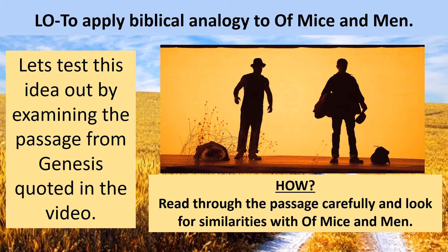We're going to test this idea that the Thug Notes guy proposed by looking at a passage from Genesis — the very first part of the Old Testament. It's printed in your home learning booklet, but I'm also going to read it with you. When we read through it, I'd like you to think about where there might be some similarities with parts of the story or the context of Of Mice and Men. Personally, I am not religious, but that doesn't mean I don't appreciate how beautifully written parts of the Bible are. You will also notice there are some little numbers all the way through — those are the different verses within the chapter, because the Bible is essentially a form of poetry, a form of literature.